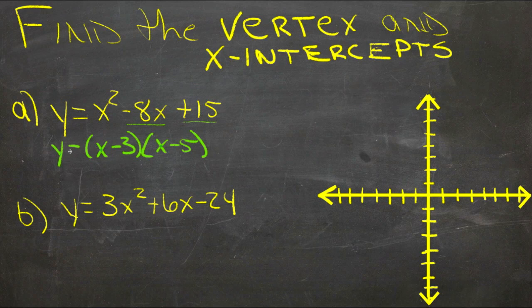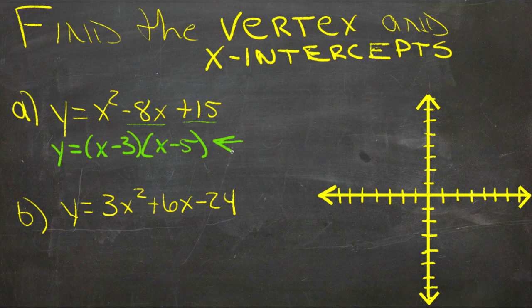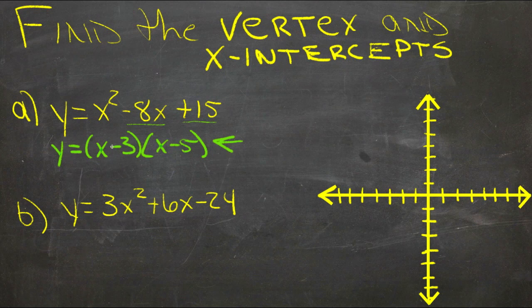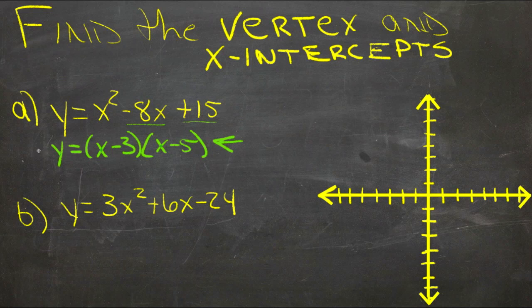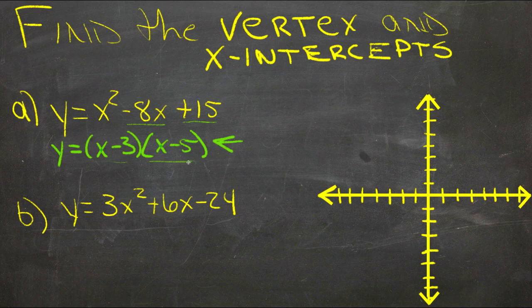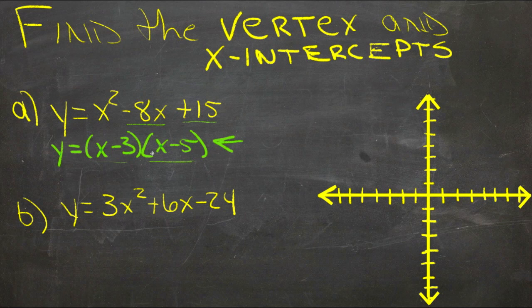So then we have y equals that, and what we're looking for are the x-intercepts. So this function right here is now written in intercept form. And we can see right just by glancing at it what the x-intercepts are. Those are the points where y equals 0. So y will be 0 when either one of these is 0, because anything multiplied by 0, no matter what the other one is, they'll both be 0.